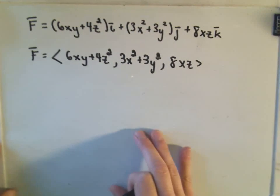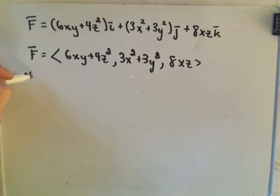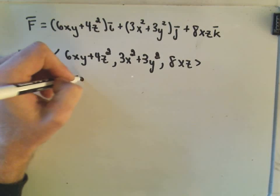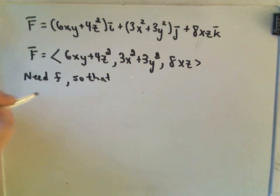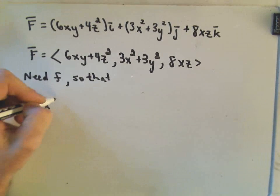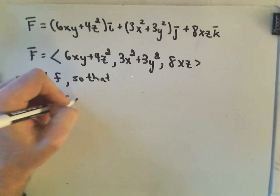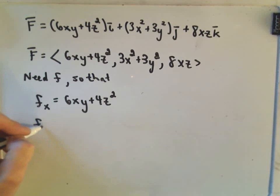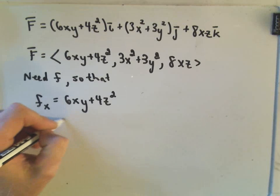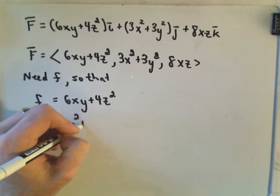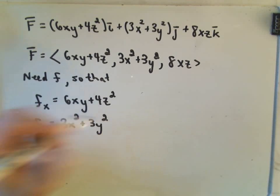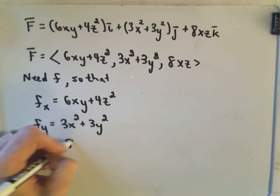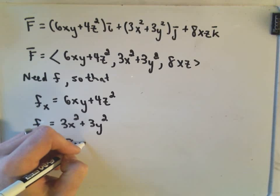What we need is a scalar function f such that the partial of f with respect to x equals 6xy + 4z², the partial with respect to y equals 3x² + 3y², and the partial with respect to z equals 8xz.